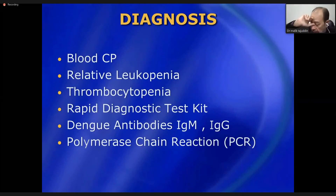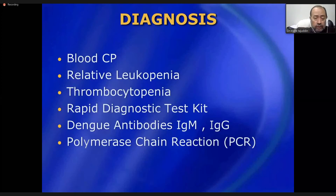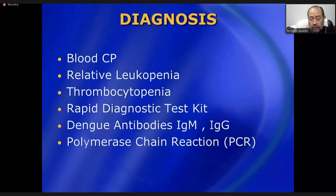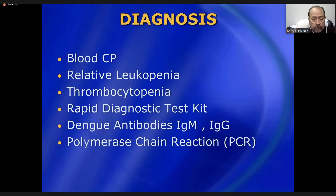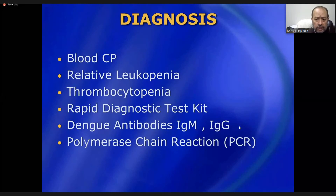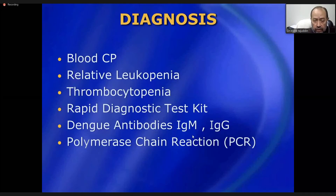If platelets are below 100,000 — or even 80,000 or 40,000 — immediate hospital referral for platelet transfusion and supportive measures is required. Dengue IgM and IgG antibodies can be detected — IgM usually comes positive four to five days after onset; IgG appears later. For quick same-day diagnosis, PCR (polymerase chain reaction) for dengue virus is the most sensitive tool. You can suspect through history and CBC, and confirm through PCR.